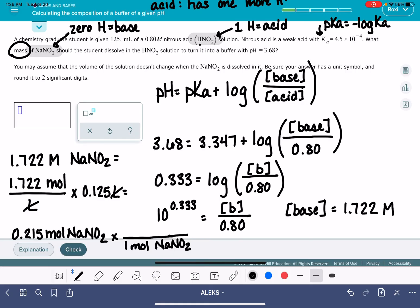23 plus 14 plus 16 plus 16. This will give me 0.215 times 69 grams per mole.